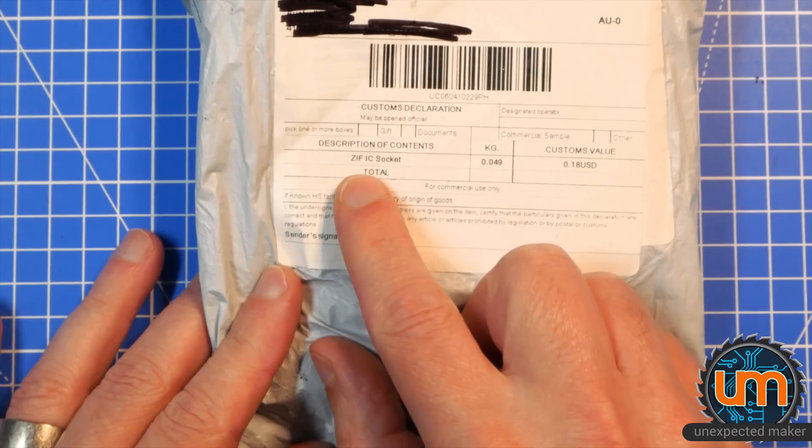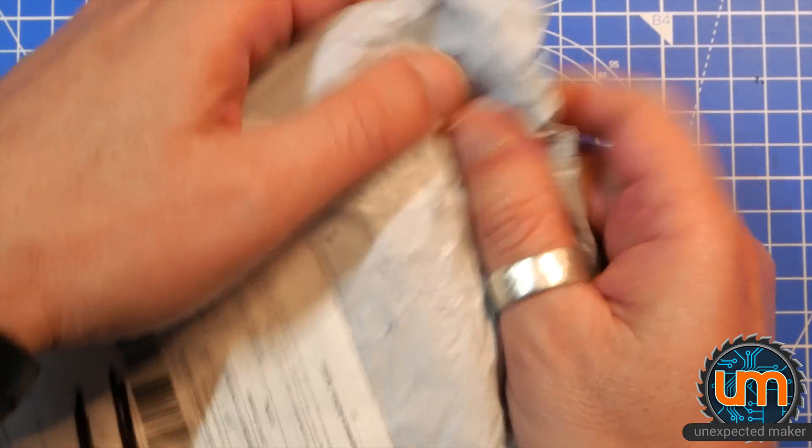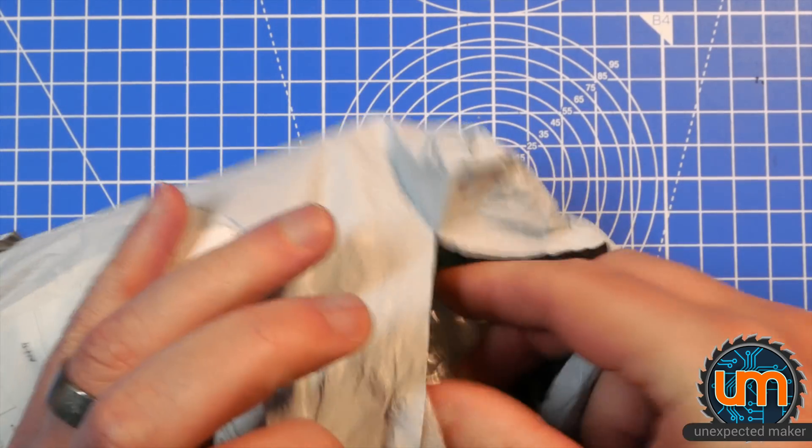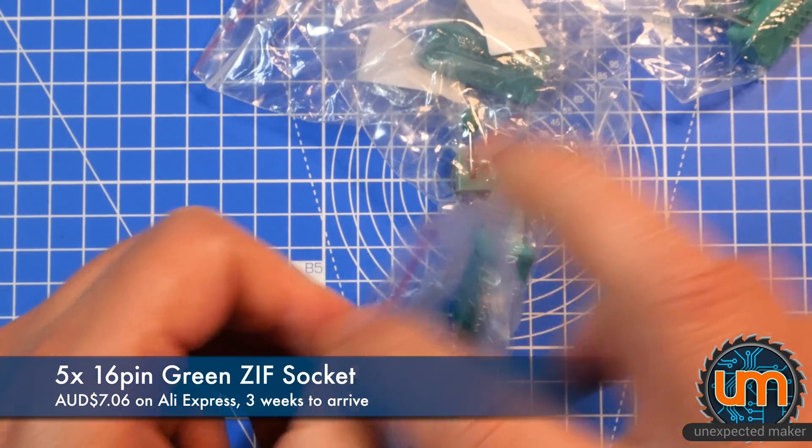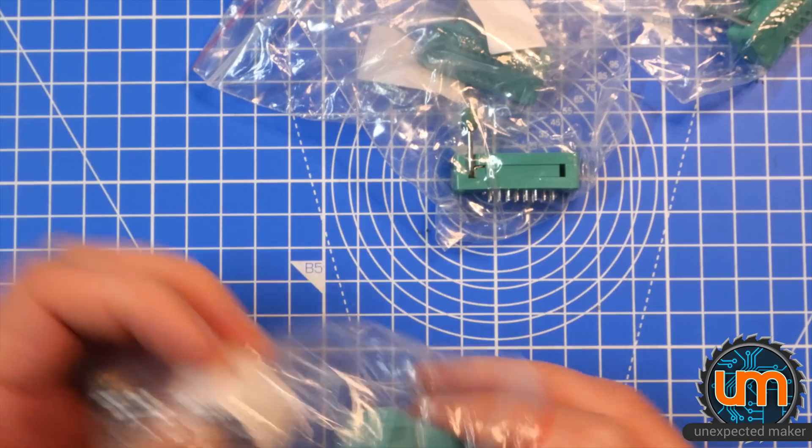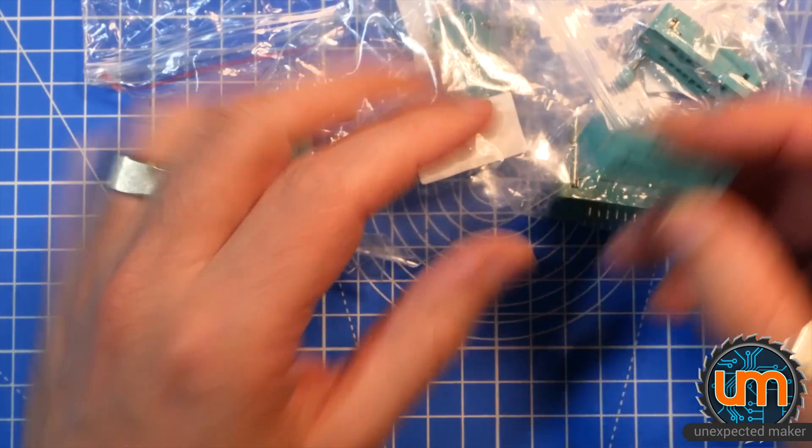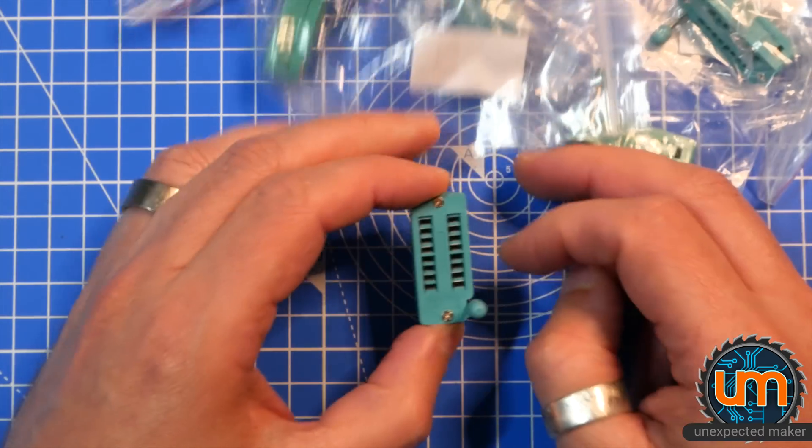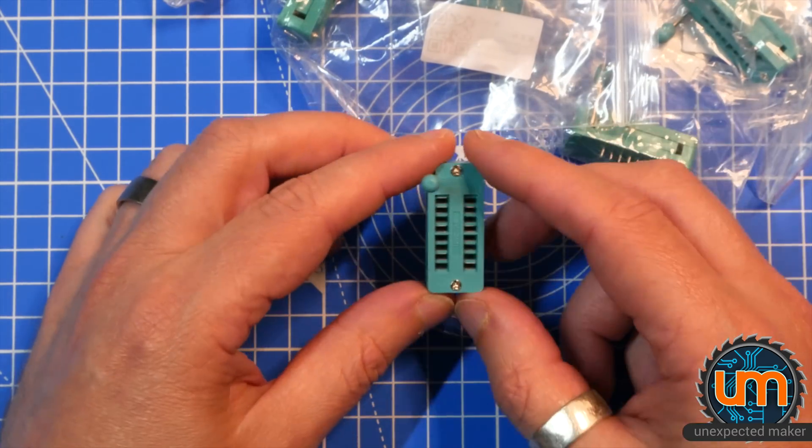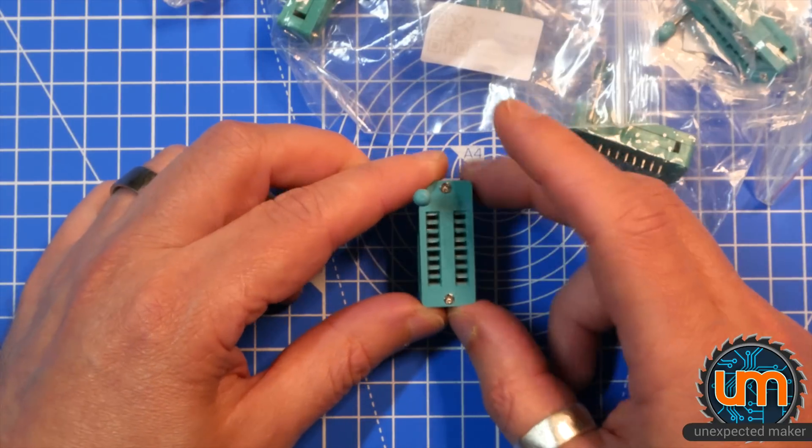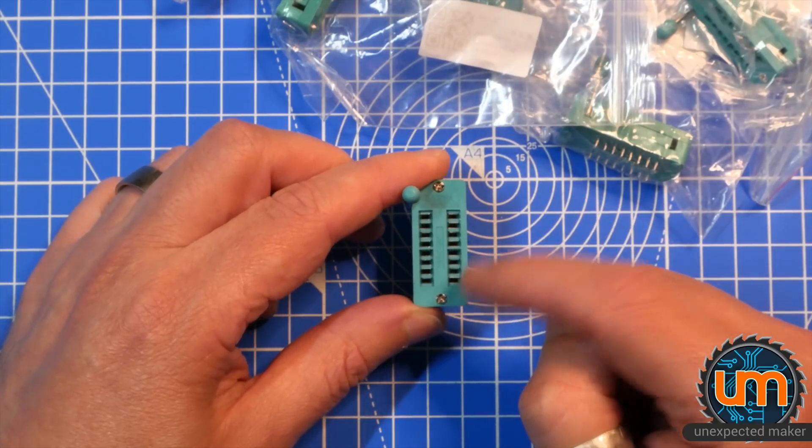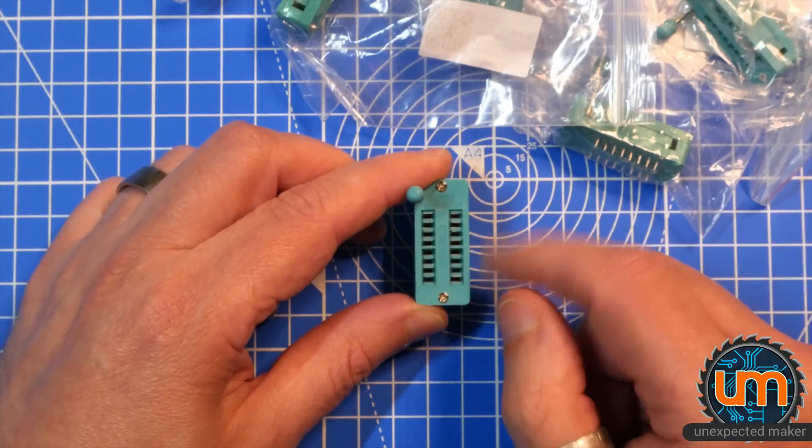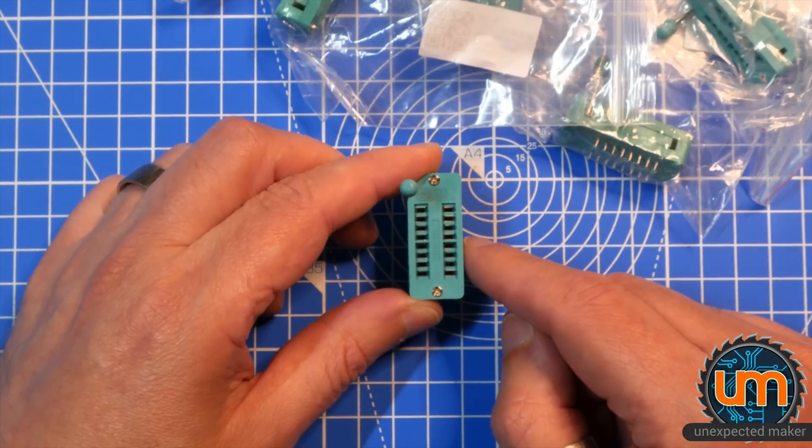Next we have description of contents ZIF sockets. I ordered some ZIF sockets because I only really needed one, but they came in packs of five. So this is for a programming board that I'm making for my ATtiny 85s, or I guess any type of ATtinies. So right now I've got DIP packages that I work with sometimes and I've got surface mount packages that I work with sometimes. I'm programming my boards like my TinyDevs with pogo pins. Sometimes I'm using my little IC adapter, my SOIC to DIP adapter. And sometimes I just want to use my DIP package ICs.